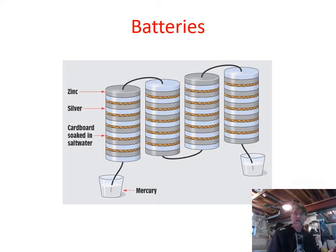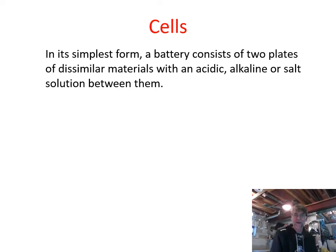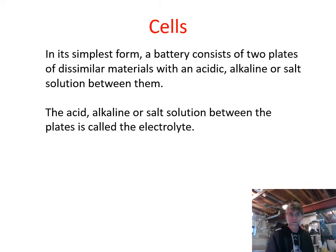Cells are just a part of the larger battery. A single cell in its simplest form is two plates of dissimilar materials with some kind of acidic, alkaline, or salt solution in between — something that allows for the transfer of electrons. As the chemical reaction takes place and energy is released, electrons are forced in a particular direction. This solution in between is referred to as an electrolyte, which provides the ability for electrons to move from one plate to the other.